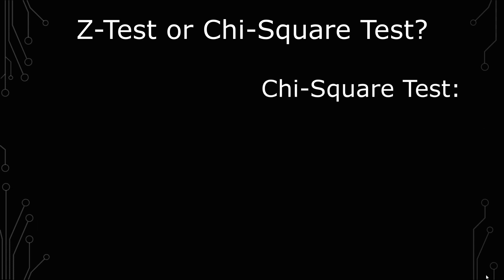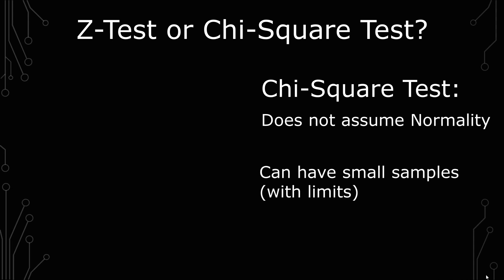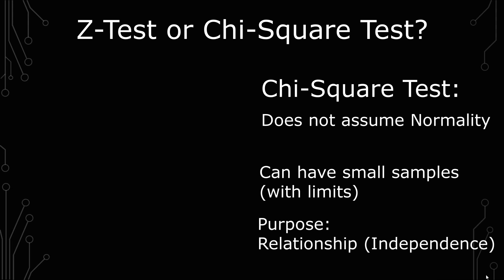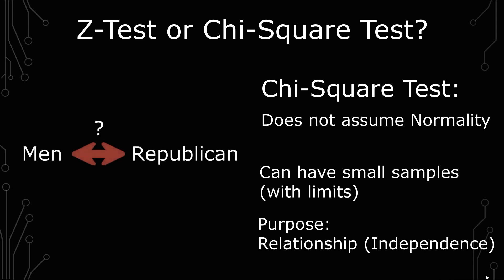The chi-square test does not assume normality. It does not need a large sample size, but it does have its limits to how small it can be. The purpose of the test is looking at a relationship between variables, usually independent variables. An example of this is sex and political party affiliation — we're trying to see the relationship between those two variables, not whether or not their average means are different.